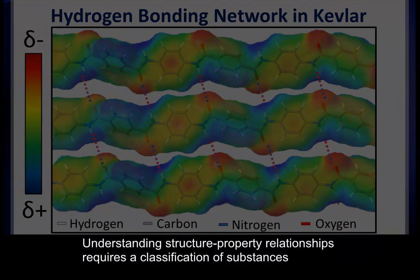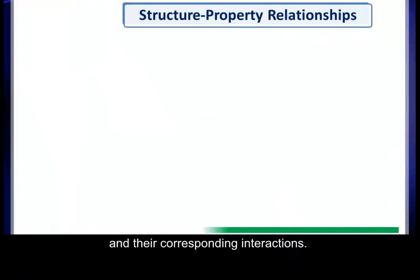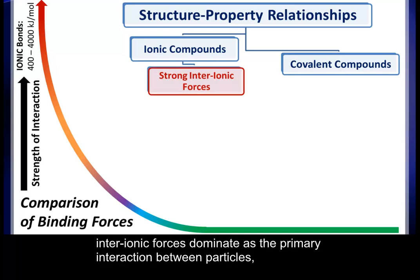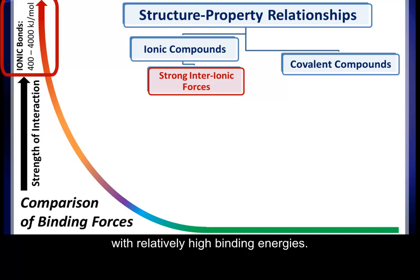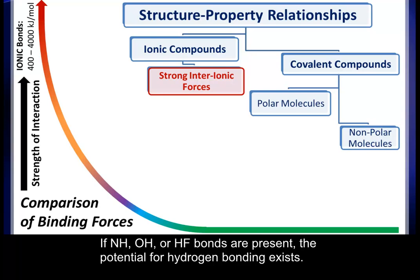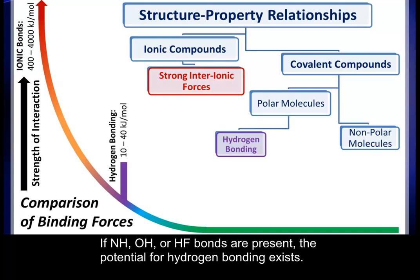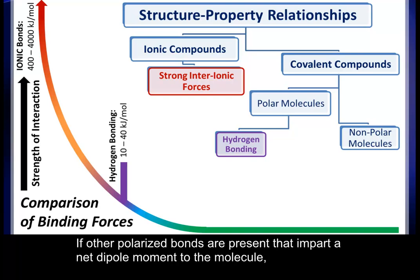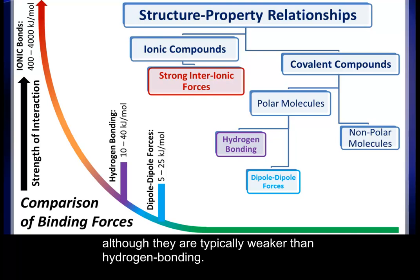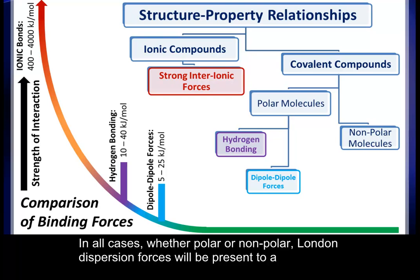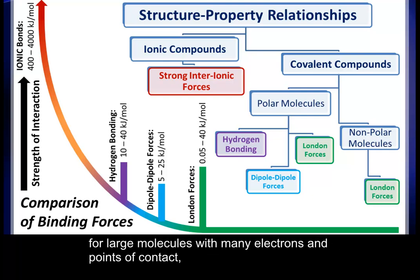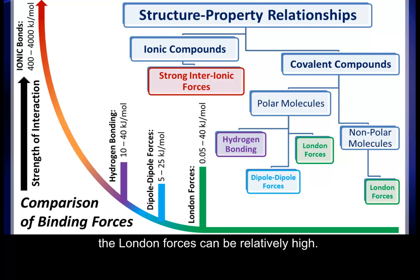Understanding structure-property relationships requires a classification of substances and their corresponding interactions. For ionic compounds, the charges involved are so large that interionic forces dominate as the primary interaction, with relatively high binding energies. Covalent compounds must first be classified by polarity. If NH, OH, or FH bonds are present, the potential for hydrogen bonding exists. If other polarized bonds impart a net dipole moment, then dipole-dipole forces are also possible, although typically weaker than hydrogen bonding. In all cases, whether polar or nonpolar, London dispersion forces will be present to a varying degree depending on the size and shape of the molecules. Although these interactions are typically quite small, for large molecules with many electrons and points of contact, London forces can be relatively high.